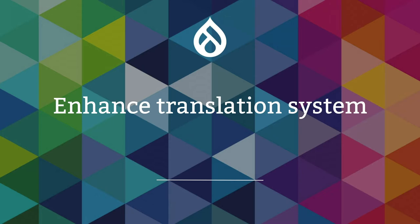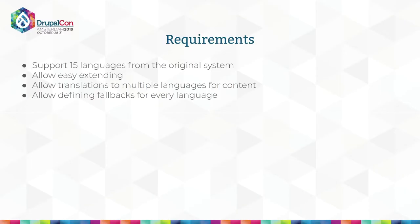The last business goal was to enhance the translation system. The requirements were to support all 15 languages from the original system and have an easy way to add new languages — because as I said, they were focused on Europe but recently started recording Cuban dissidents and running some projects in Asia. There were also limitations in the old system that didn't allow them to define more than one translation for one piece of content.